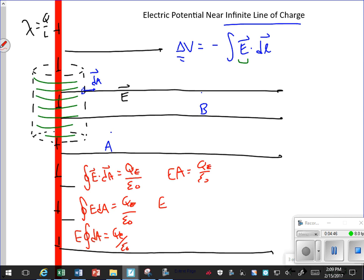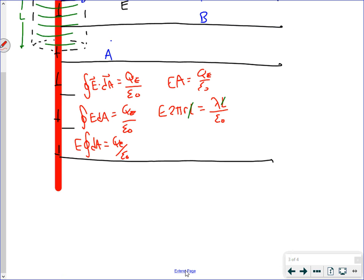The integral of DA is just A. So now we're to this place where we say E A is Q enclosed over epsilon naught. The lateral area of our Gaussian surface is the circumference times this length L. Q enclosed is lambda times that same L. So the L's go.